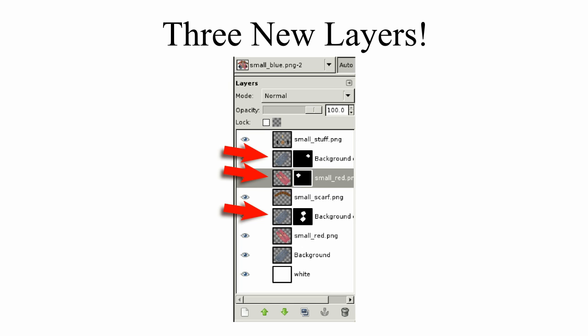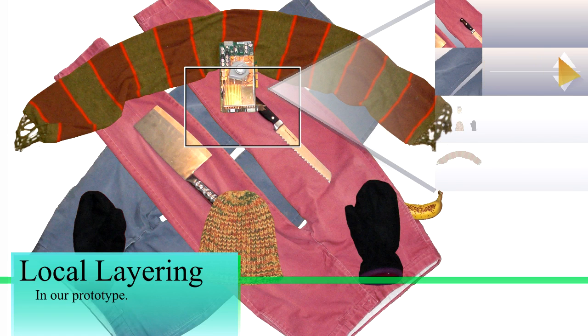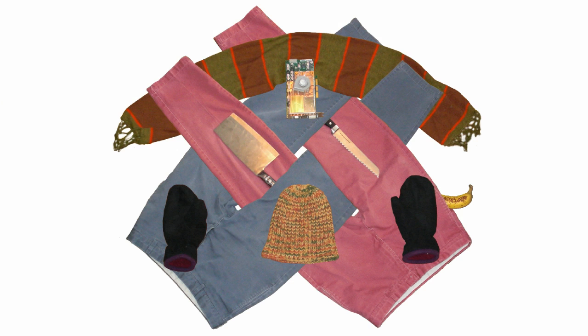Here, the user created three new layers to attain the desired overlapping effect. In our local layering prototype, layers are reordered by selecting a region of overlap and using the Local Layers dialog to change the stacking. Since stacking orders can be different in each region of overlap, no layers need to be duplicated or masks painted. The final image.